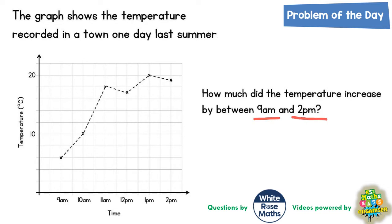The first thing we might need to do is circle 9am along the bottom of the graph and 2pm along the bottom of the graph. So if we go from 9am and draw a line up to the cross here, and then draw a line across to the y-axis, we need to figure out what temperature that is.